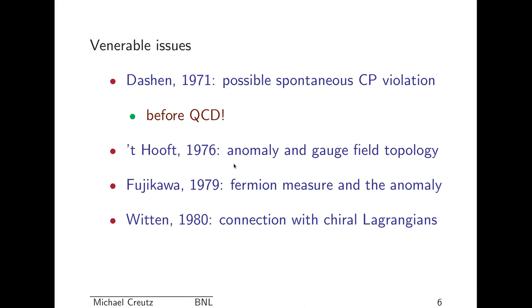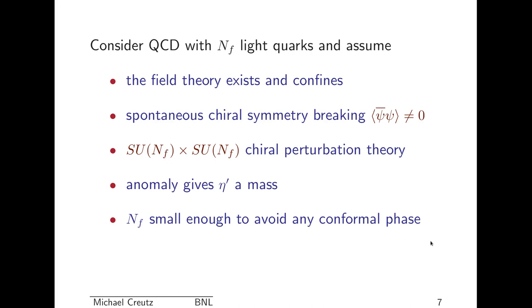In the mid-70s, 't Hooft showed that there was a very close connection between the anomaly and the topology of the gauge fields, the instantons and stuff. Fujikawa in 1979 showed a very nice way to understand the anomaly was through the fermion measure. Witten, around 1980, showed that there was a really nice connection with chiral Lagrangians, which is the main thing I'll be talking about here.